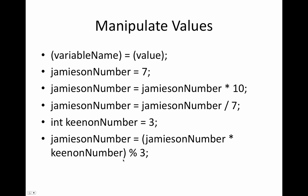And then it's going to modulo 3, so it's going to divide by 3 and get the remainder. And 30 divided by 3 has no remainder, so the result of this is 0. So then Jameson number is 0.